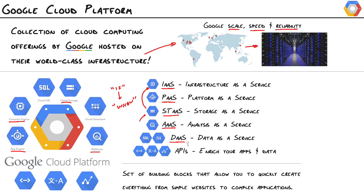Moving on, we also have database as a service. There are two offerings here: Cloud SQL, which is fully hosted and managed MySQL instances in Google's Cloud, and Cloud Datastore, which is their NoSQL solution that App Engine can natively hit, or it's also a standalone product you can access from external applications through the Datastore API.